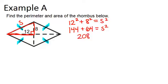So 208 equals S squared, and once we take the square root of both sides, we get that each side is approximately 14.42 units long. So each of these sides are 14.42.